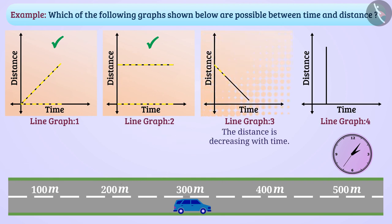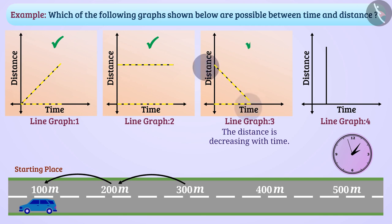The distance is decreasing with time in the situation shown in line graph 3. While returning from a starting place, the time increases but distance from starting place will decrease. Therefore, the situation shown in line graph 3 is possible. Therefore, line graph 3 can be a time-distance graph.